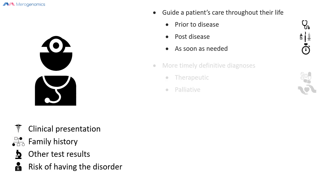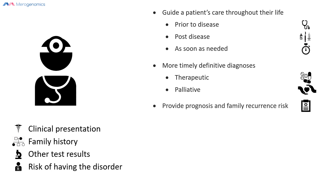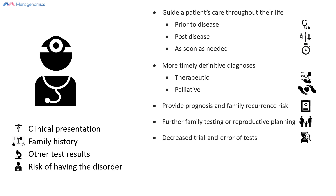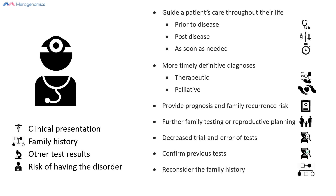This can also help the doctor determine a more definitive diagnosis in both therapeutic and palliative care, determine prognosis, and assess recurrence risk in the family. It can inform how the remainder of the family should be tested through cascade testing and potentially help the family with reproductive planning. This can reduce the need for trial and error of other tests while confirming existing test results, and finally help the doctor reconsider family history in light of the genetic results — as well as persuade the patient toward healthier lifestyle choices.